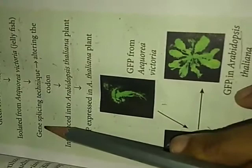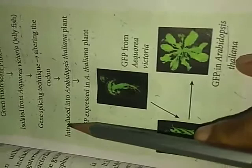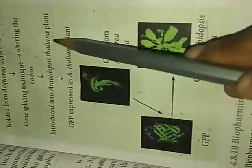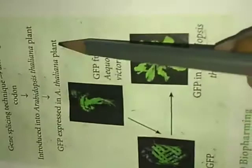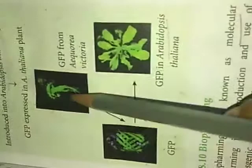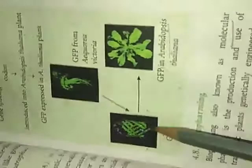The green fluorescent protein was isolated from Aequorea victoria jellyfish. Using gene splicing technique and altering the codon, GFP was introduced into the Arabidopsis thaliana plant — a member of the Brassicaceae family and a flowering plant. GFP was then expressed in Arabidopsis thaliana.